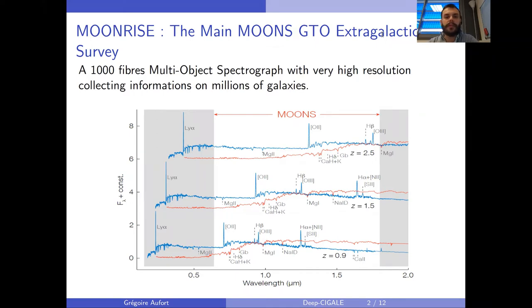For example, the MOONRISE extragalactic survey, which will give us very high resolution spectra on millions of galaxies. Here on the figure you have two simulated galaxies at three different redshifts, and we see the MOONS wavelength range on which we can see, from z=1 to about z=3, every emission line from O2 onward.